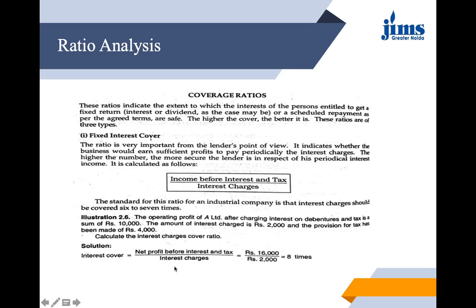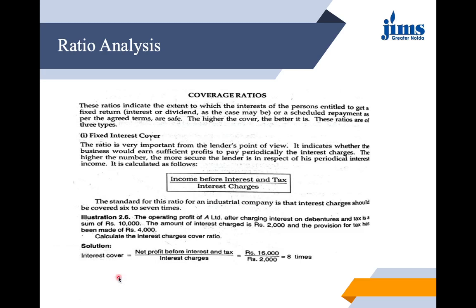The formula used for this is: PBIT — income before interest and tax, also written as Profit Before Interest and Tax — divided by the interest charges. The standard for this ratio for an industrial company is that interest charges should be covered at least six to seven times, which is considered ideal.